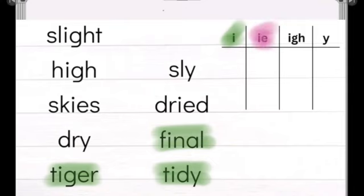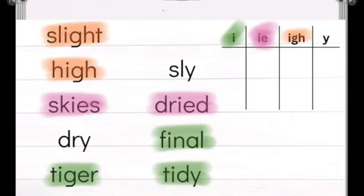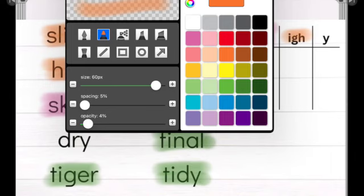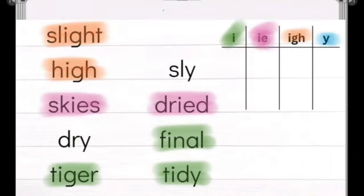We have our I-E category. And that one, we should have found the word skies and dried. I bet you did. Then in our I-G-H category, you should have the word slight and high in that one. And last but not least, we've got our Y saying that I sound. You should have found the word dry and sly.